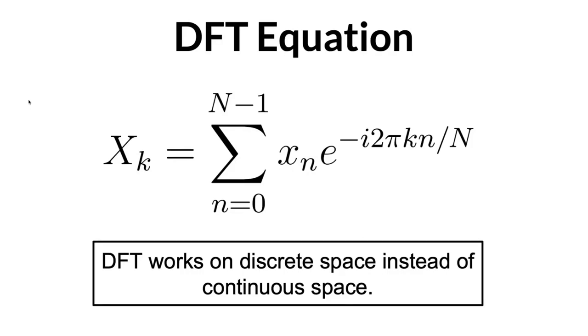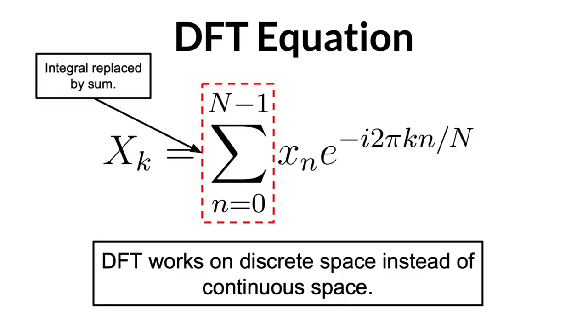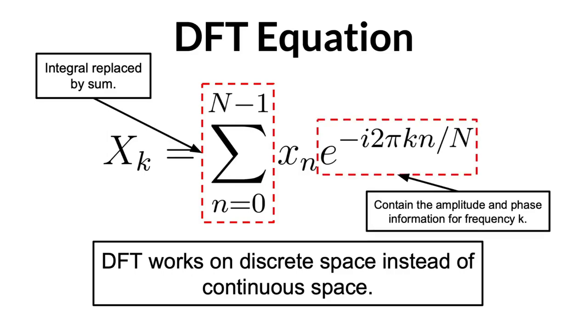Thus, to extract the amplitude and phase for a specific frequency k, we replace the integral with a sum over the samples within our input signal, and divide each sample with the corresponding complex number of that frequency as we did in the original Fourier transform. And that's basically it.